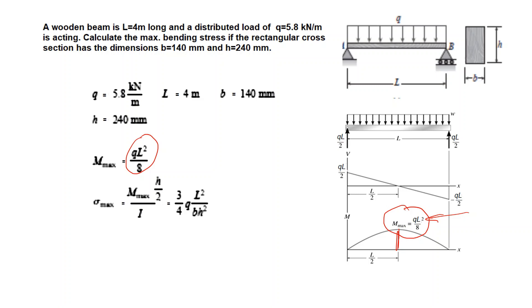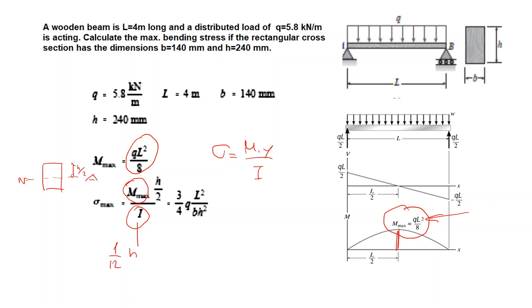With the help of the bending formula σ = My/I, we take this maximum value. Your section is a rectangular section with the neutral axis in the middle, so y equals h over 2. For a rectangular beam, the moment of inertia I equals 1/12 × b × h³. Organizing this equation gives you sigma max.